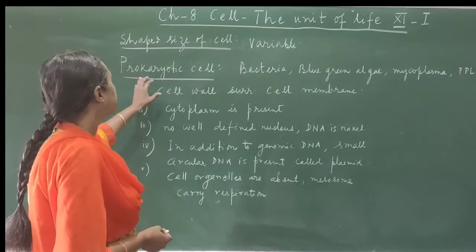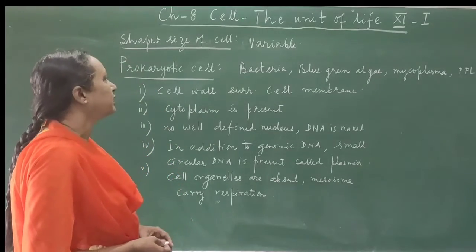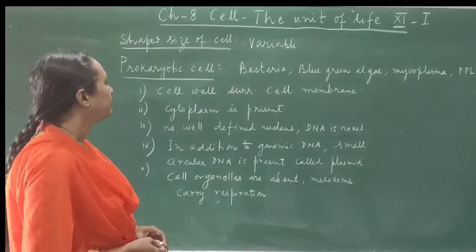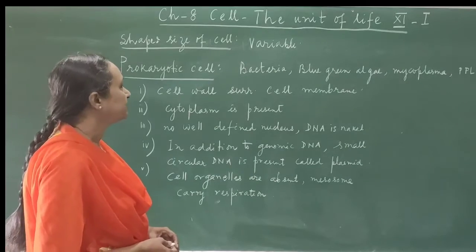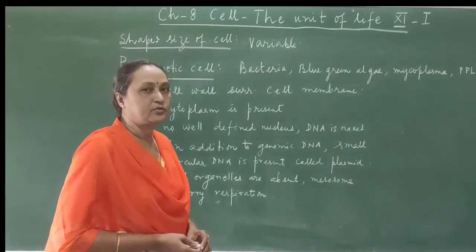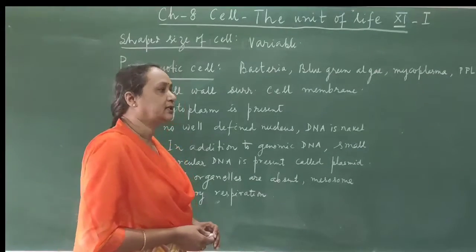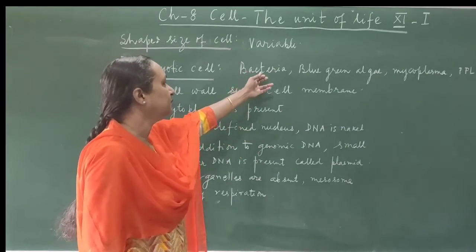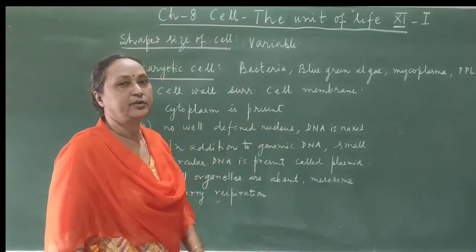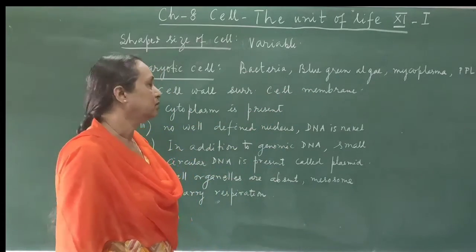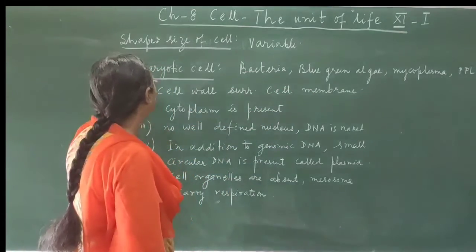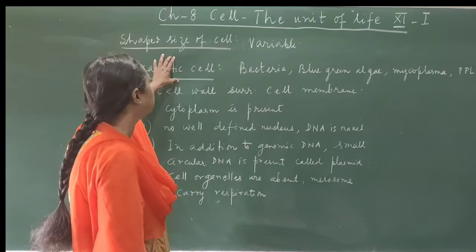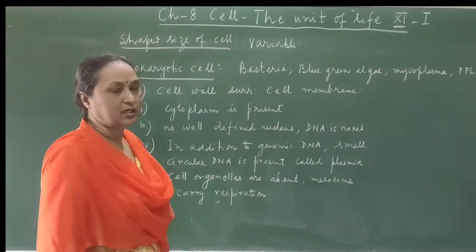Now we will discuss about prokaryotic cells. Prokaryotic organisms, where the body is composed of one single cell — the organisms include bacteria, mycoplasma, and others. These organisms have only one single cell.